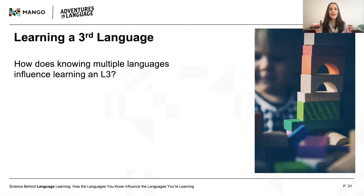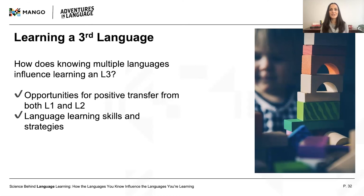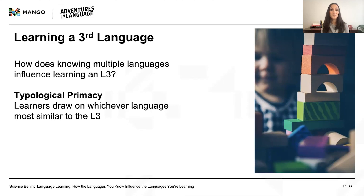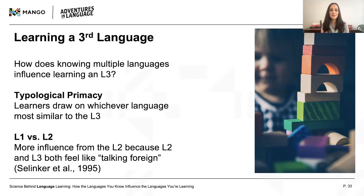What if you know multiple languages? How does this influence learning your L3? There's clear evidence that knowing multiple languages facilitates learning an additional language. Beyond the positive transfer you might expect from simply having more cognates and grammatical features to draw on, it's also likely that you've developed and honed language learning skills and strategies that you can put to use when learning a new language. Interestingly, multilingual learners are more likely to draw on a language that's more typologically similar to their L3, regardless of whether that's the L1 or L2. So both Finnish-Swedish and Swedish-Finnish bilinguals tend to rely more on Swedish when sussing things out in English. This phenomenon is referred to as typological primacy. However, the L2 does tend to exert some more influence on the L3 because they both put the speaker in the mode of speaking a foreign language.